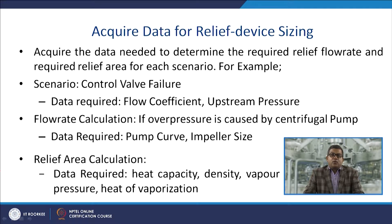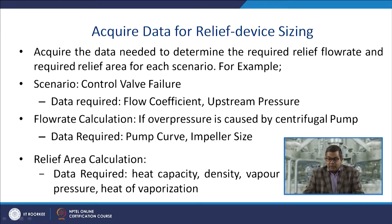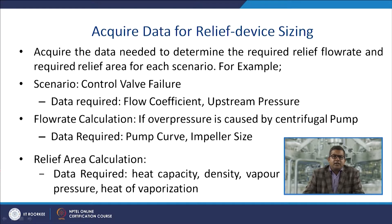The next aspect is acquiring data needed to determine the required relief flow rate and relief area for each scenario. For example, if the scenario is a control valve failure, the data required includes the flow coefficient and upstream pressure for flow rate calculations. If overpressure is caused by a centrifugal pump, the data required includes the pump curve and impeller size.